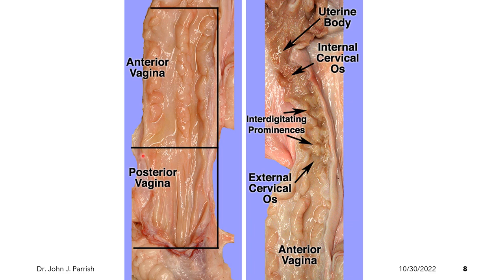The separation between anterior and posterior vagina is delineated by the change in color and texture. On the right, we have the enlarged image of the cervix. The cervix of the pig is composed of the external cervical os, the internal cervical os — which is the opening between the cervix and the uterine body — and a prominent feature of the pig cervix is the presence of interdigitating prominences. The anterior boundary of the cervix is the uterine body and the posterior boundary is the anterior vagina.